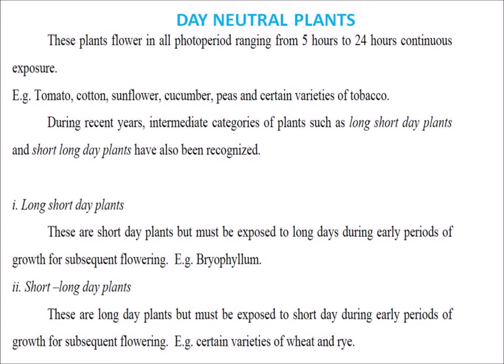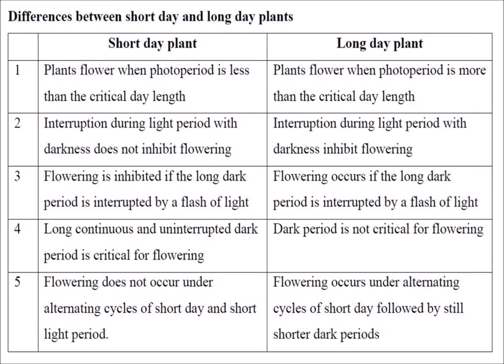In recent years, intermediate categories of plants have also been recognized: long-short day plants and short-long day plants. Long-short day plants are short day plants but must be exposed to long days during early periods of growth for subsequent flowering — example: Bryophyllum. Short-long day plants are long day plants but must be exposed to short days during early periods of growth for subsequent flowering — example: certain varieties of wheat and rye.